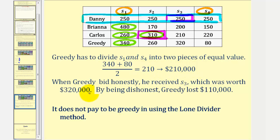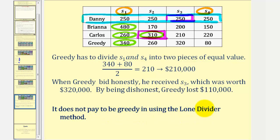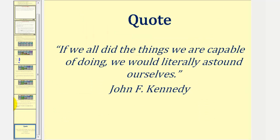Remember, when greedy bid honestly, he received s sub three, which he valued at $320,000. By being dishonest, greedy lost $110,000 — the difference between $320,000 and $210,000. This is the reason why it often doesn't pay to be greedy or dishonest when using the lone divider method.